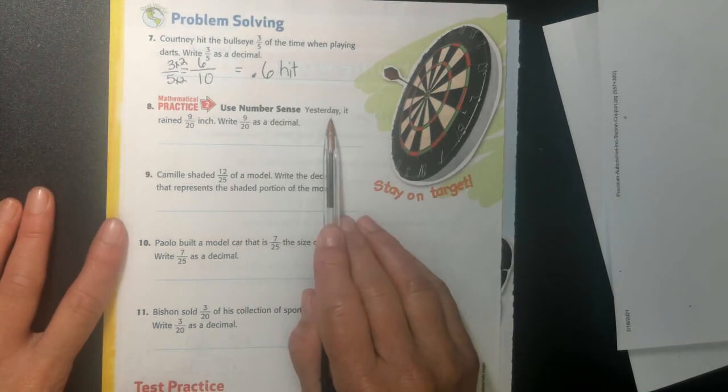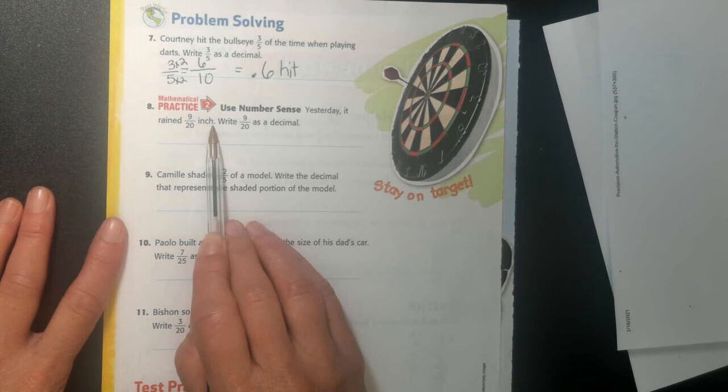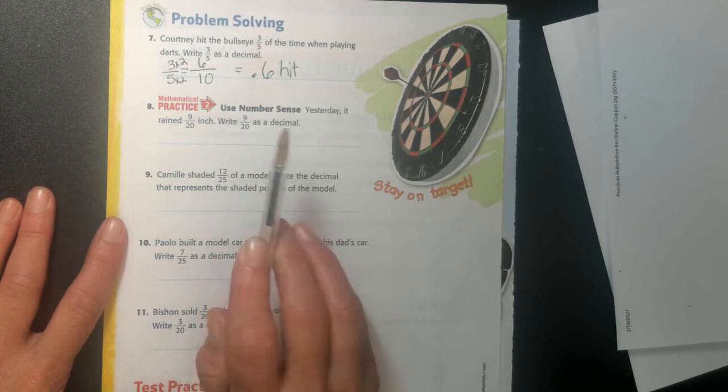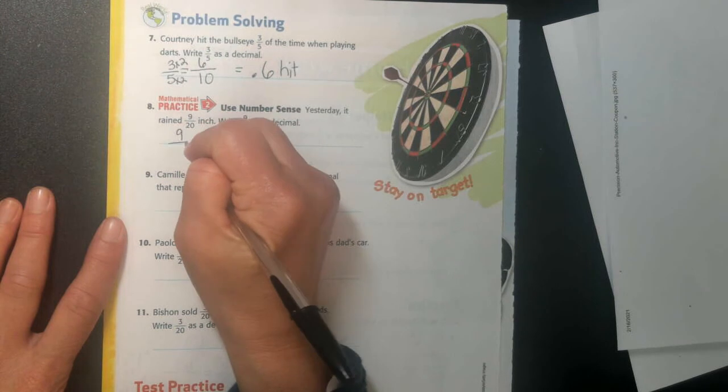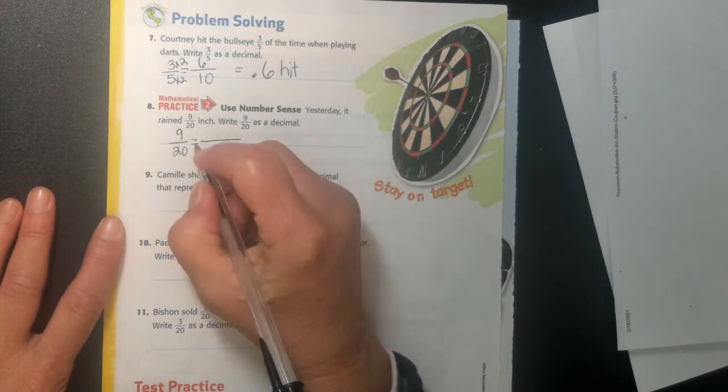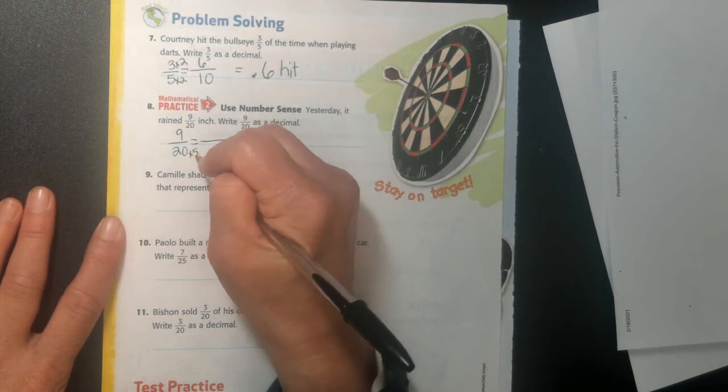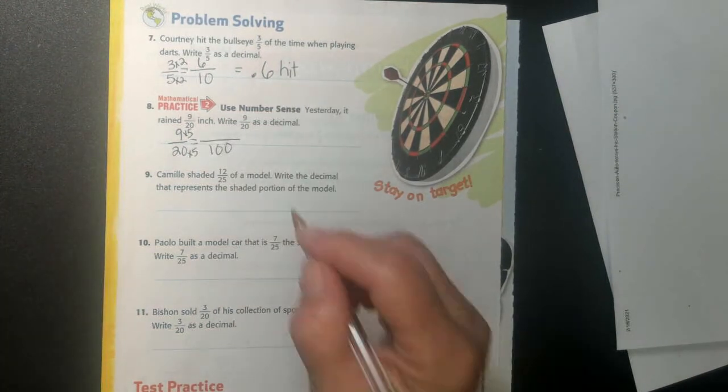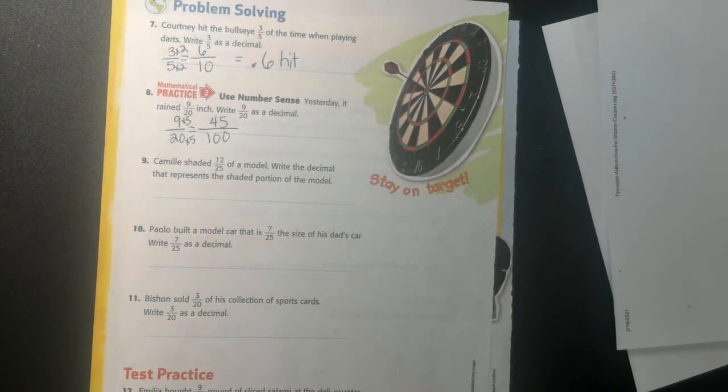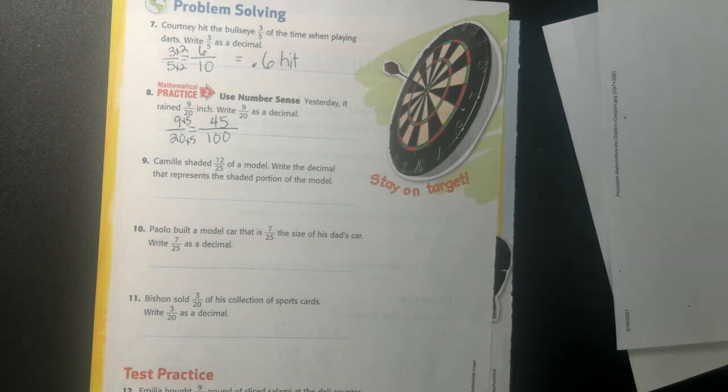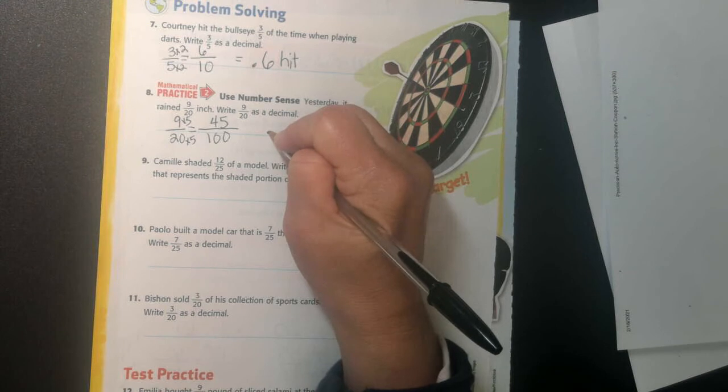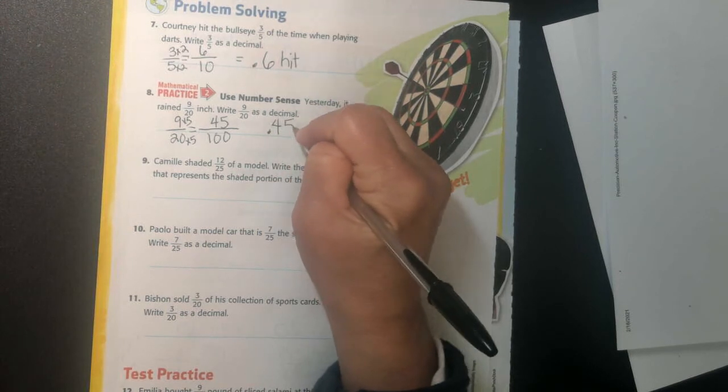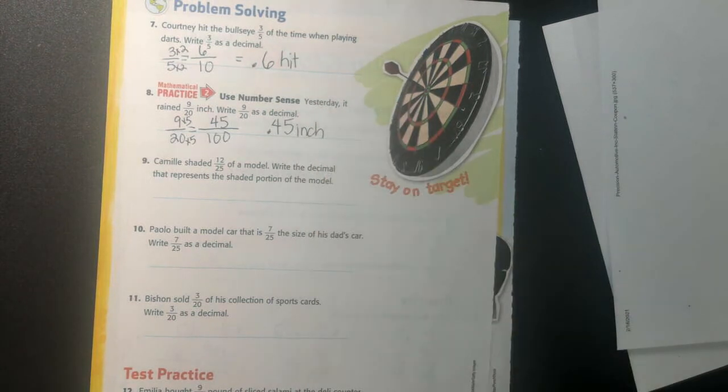She hit it 0.6 of the time, 6 tenths of the time. Right, if she would have thrown 10 times, she would have hit it 6 times. Alright, my next one. Yesterday, it rained 9 twentieths of an inch. Write 9 twentieths as a decimal. So I'm going to take 9 over 20. And I'm going to say 20 times 5 is 100. And 9 times 5 is 45. Oh, my God. I break up the concept in my hand, and I was going to say 45, and then the reason. Nice, you got the right answer. Awesome. So my answer is 0.45 inch. Right, it rained less than an inch. It rained 0.45 of an inch, 45 hundredths of an inch.